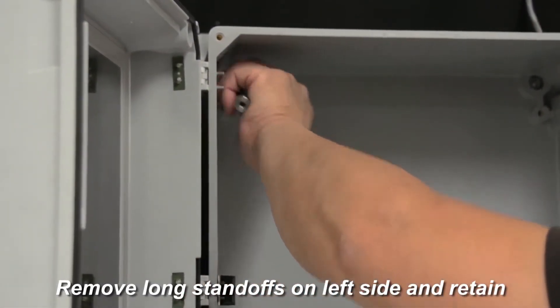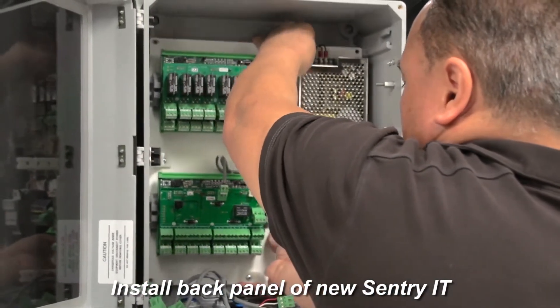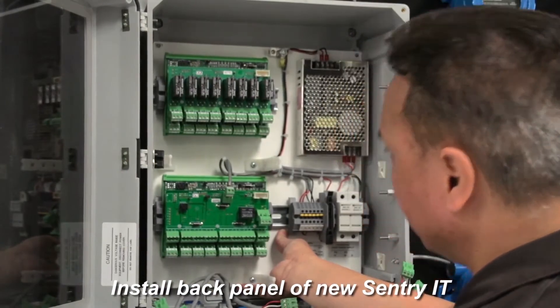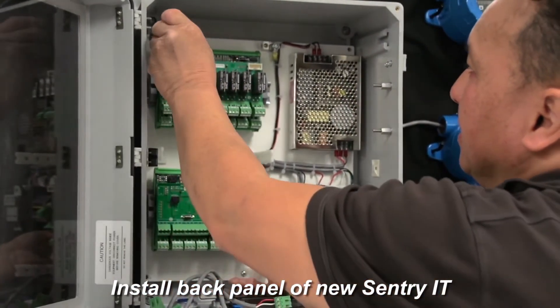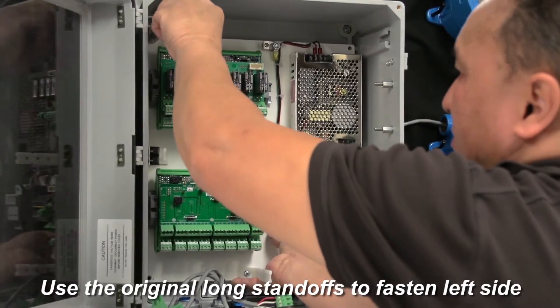Remove the long standoffs on the left side. Install the new Sentry IT back panel into the cabinet and secure using the long standoffs previously removed from the cabinet on the left side panel and use the chrome screws on the right side.